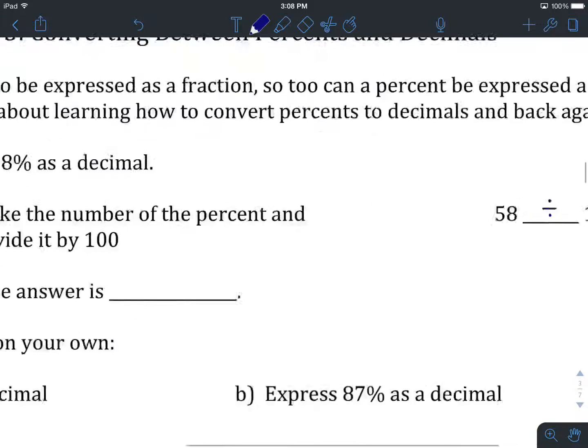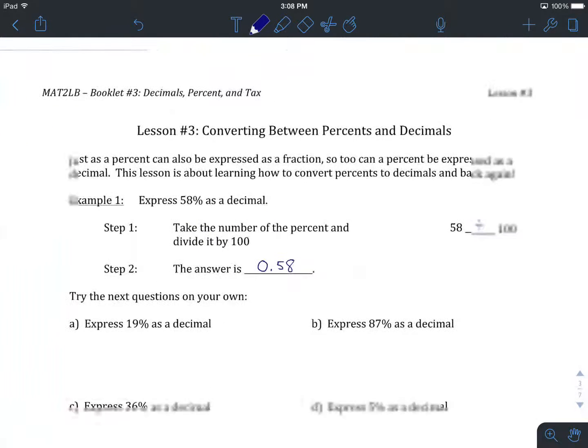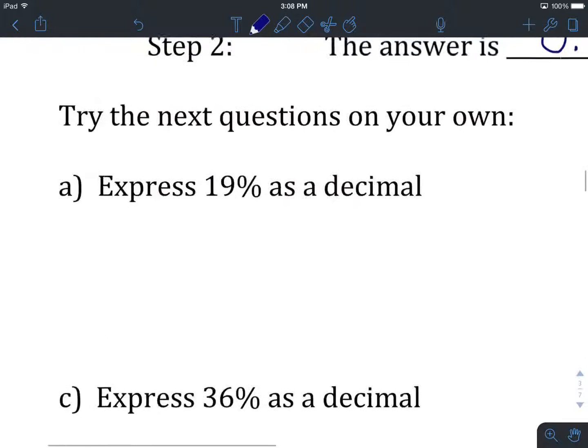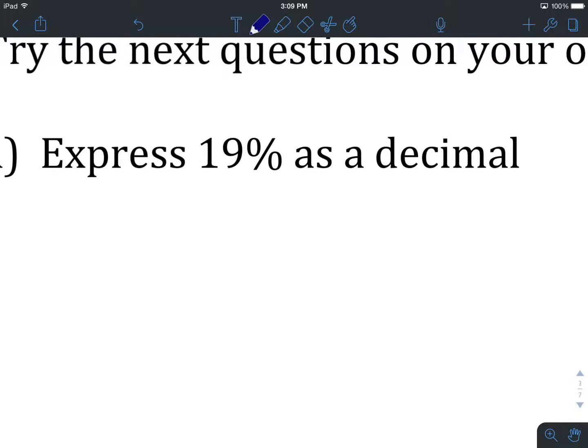and we are going to be dividing it by 100. And when I type that into my calculator, I get 0.58. And that's really all there is to converting from percents to decimals. So we'll try one more together just to see if we can internalize the step a little bit, and then you can try some examples on your own. So let's have a look at A. Express 19% as a decimal. So the first step is to take the number in front of our percentage sign, which is 19,